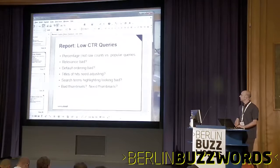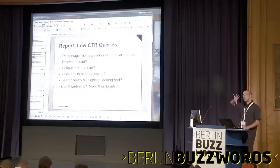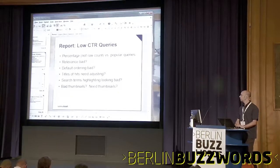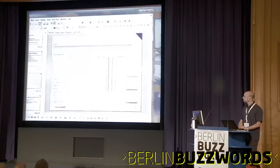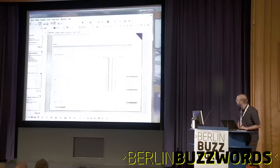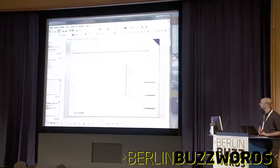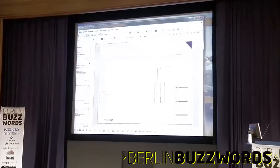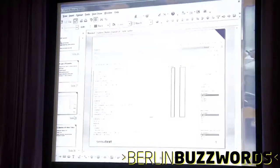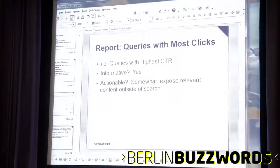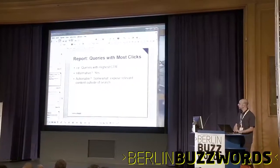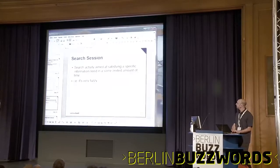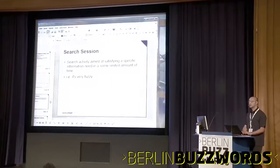Queries with low click-through rates mean people are not clicking on results — you want to track this over time globally and for specific queries. Focus on popular queries that have low CTR. You can see queries that were searched many times but yielded zero clicks — go look at those queries and figure out what kind of search experience these people had that they didn't click on anything.